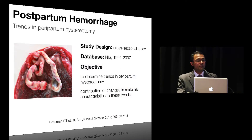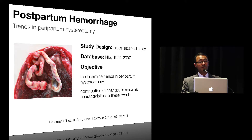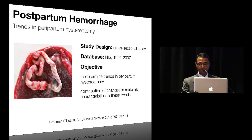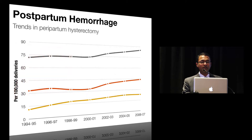Moving on to postpartum hemorrhage — when severe obstetric hemorrhage fails to respond to pharmacological treatment, one of the life-saving interventions is peripartum hysterectomy. This study by Bateman's group quantified the incidence of peripartum hysterectomy in the United States using the nationwide inpatient sample database between 1994 and 2007. There was a gradual increase in the rate of peripartum hysterectomy starting around the year 2000, expressed per 100,000 deliveries.